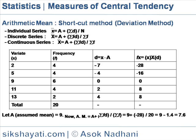Example: the table shows in the first column the value of the variate, and the second column shows the frequency — that is, the number of occurrences for the value of each variate. Now, we assume an assumed mean of 9 for this distribution. The third column shows the deviation from the assumed value of 9 for each value of the variate, that is d = a − x, where a is the assumed value of 9. The fourth column is the multiplication product of the frequency and that deviation.